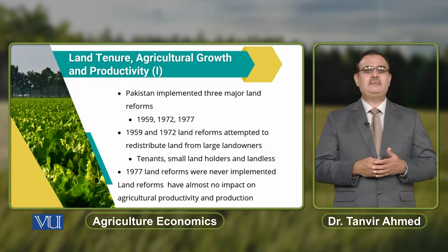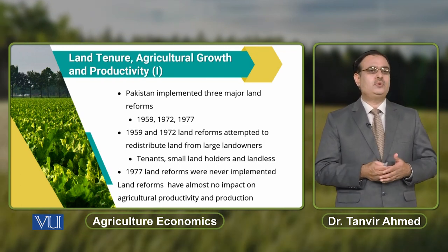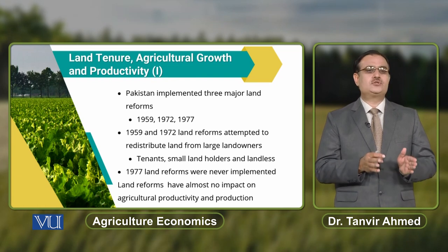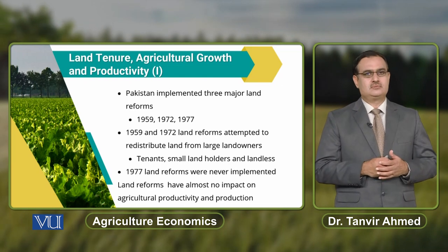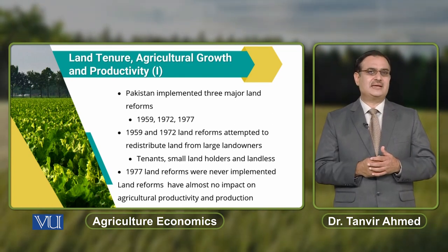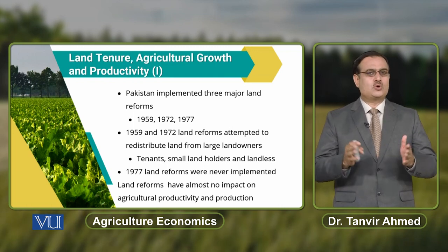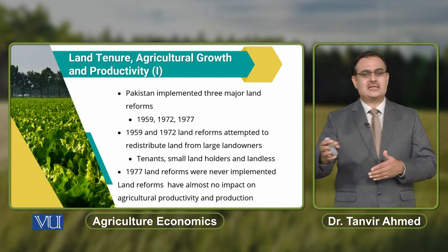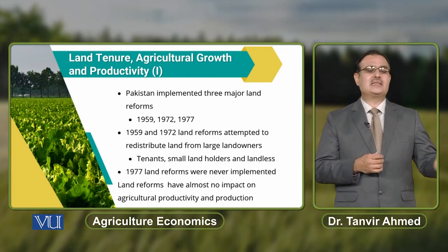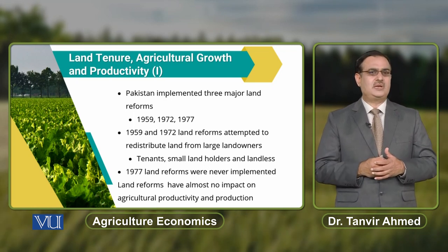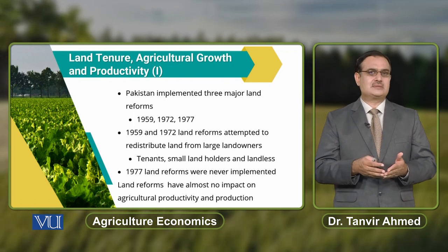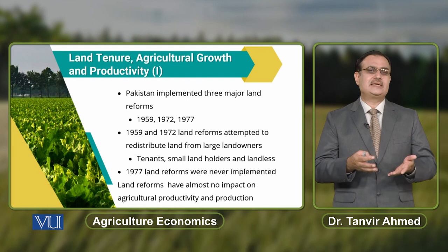In Pakistan, there are three major land reforms: in 1959, 1972, and 1977. The major objective of land reforms is to redistribute land from large landowners to small landowners and landless people. In the 1959 land reforms, the limit imposed was around 1,000 acres. But in 1972, a restriction was imposed that the maximum land holding that could be held by a zamindar was equal to 100 acres.